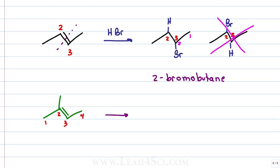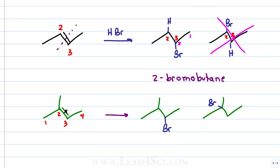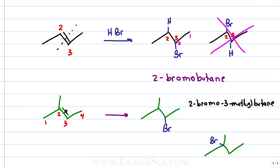If we carry out the same reaction, first breaking the pi bond and then adding hydrogen and bromine, for the first product we'll add hydrogen to carbon 2 and bromine to carbon 3. For the second, we'll put bromine on 2 and hydrogen on 3. Remember that in skeletal structure, hydrogens are invisible, so all we're left with is bromine sitting on carbon 2 or 3. Now we have two completely different products: 2-bromo-3-methylbutane and 2-bromo-2-methylbutane.